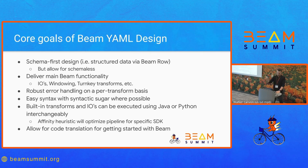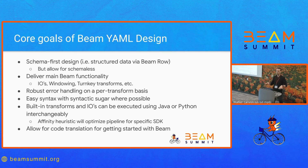One minor note: because we're supporting multiple IOs and multiple transforms, we do have multiple implementations, sometimes in Java and Python. Beam YAML wants to abstract this away and treat each transform as a black box — it's a transform, don't worry about its implementation.